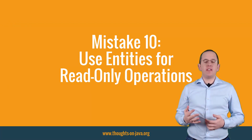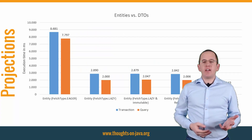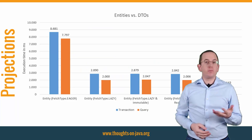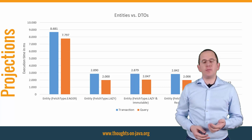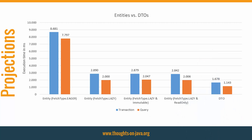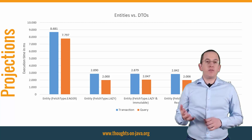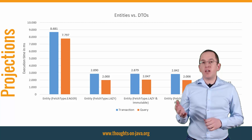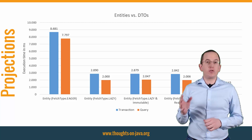Mistake number 10: Use entities for read-only operations. JPA and Hibernate support several different projections, and you should make use of that if you want to optimize for performance. You should only select the data that you need in your use case. DTO projections are a lot faster than entities if you read the same database columns — using a constructor expression in your select clause instead of an entity is just a small change, but in testing the DTO projection was 40% faster than entities. You shouldn't pass on such an easy and efficient way to improve performance.